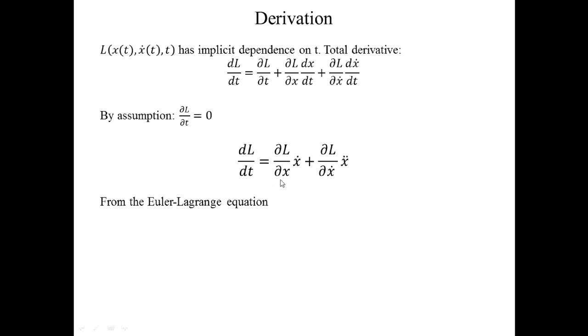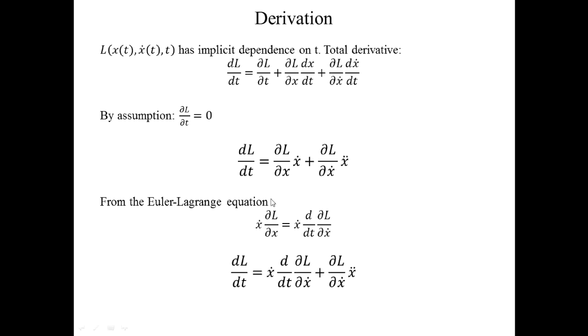One thing to note is that the first remaining term, ∂L/∂x, is similar to what appears in the Euler-Lagrange equation, except it's being multiplied by ẋ. Going back to the Euler-Lagrange equation — ∂L/∂x equals d/dt of ∂L/∂ẋ — I multiply both sides by ẋ. I then substitute that entire right-hand side into the first term, combining the total derivative equation with the Euler-Lagrange equation.